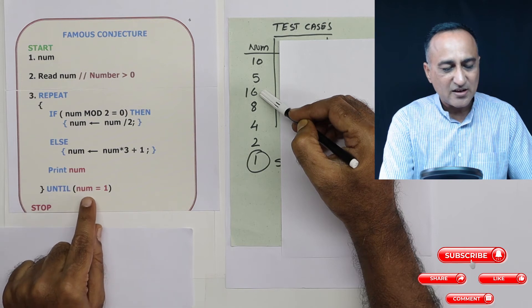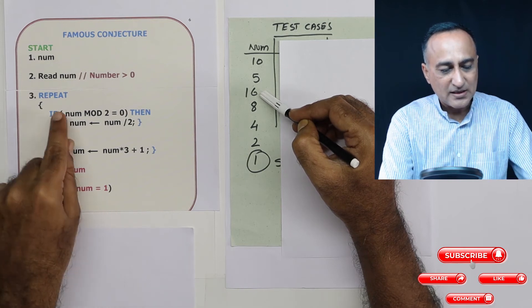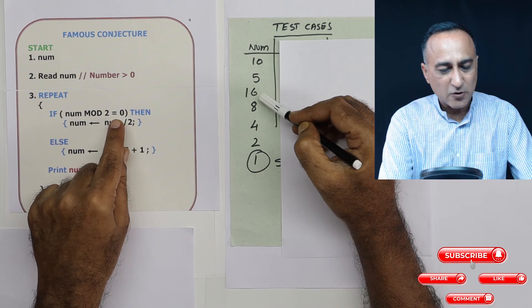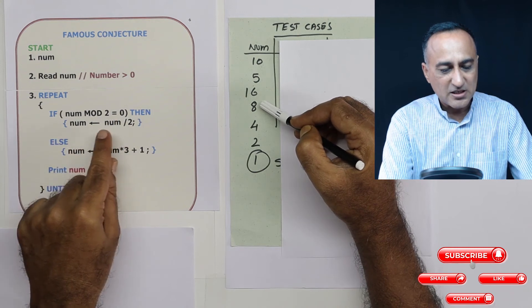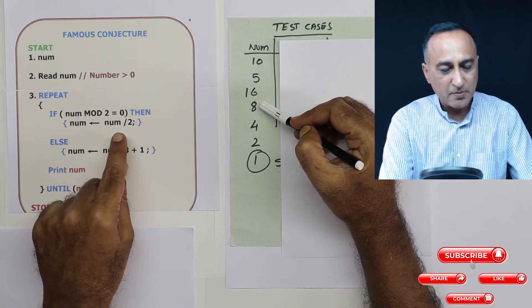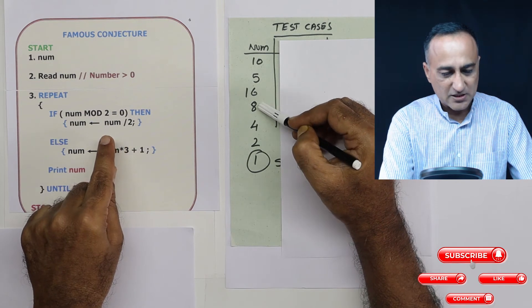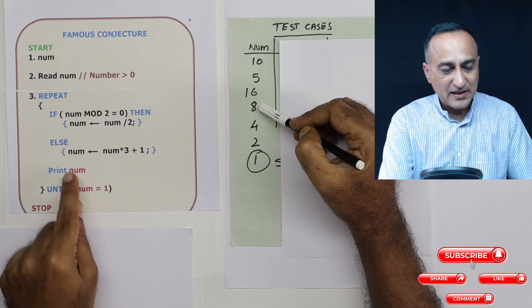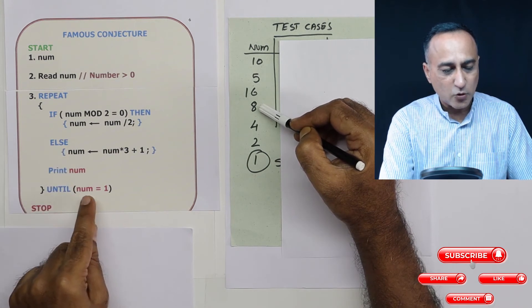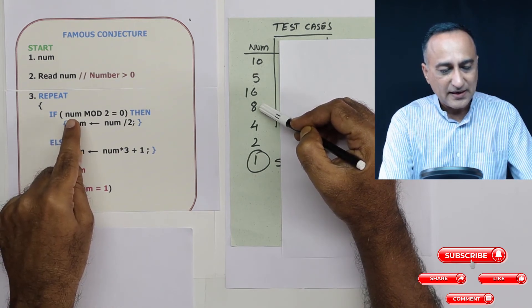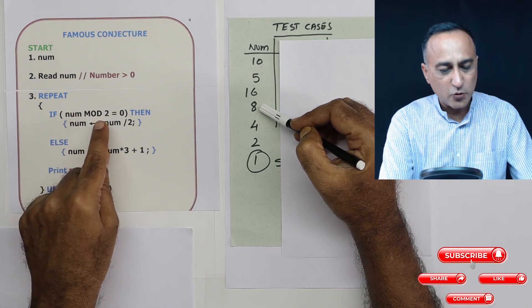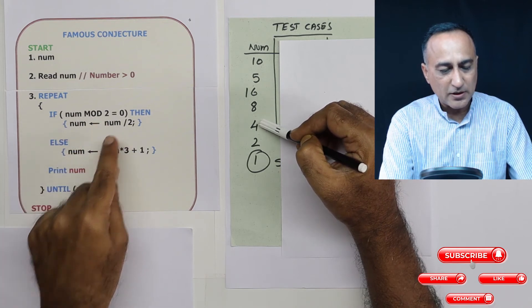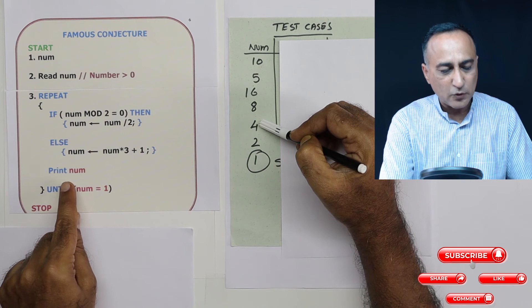Now this is again, number is not 1. 16 mod 2 is 0. Number is number divided by 2, so number from 16 becomes 8. I am going to print 8. Then this is still not true. I come here. 8 is even, number 8 mod 2 is 4, so number becomes 4 here. I am printing 4.